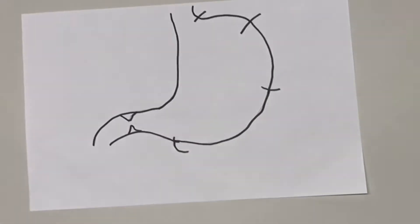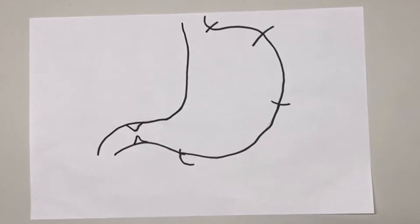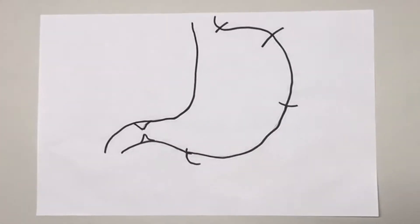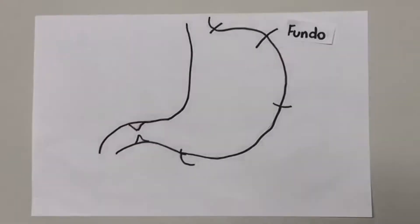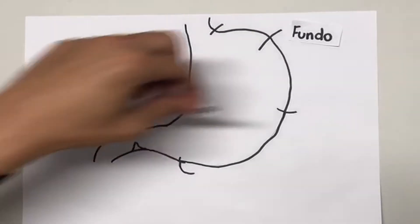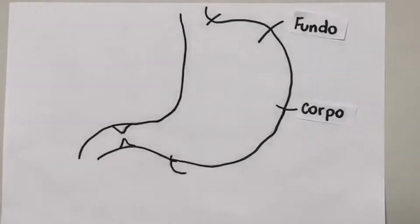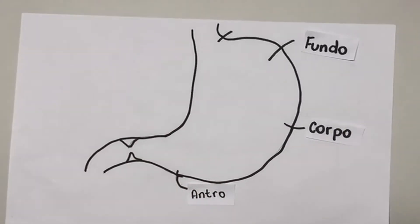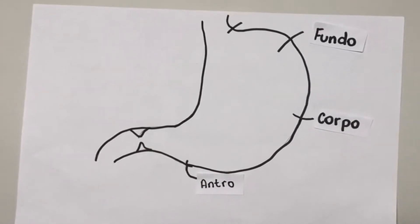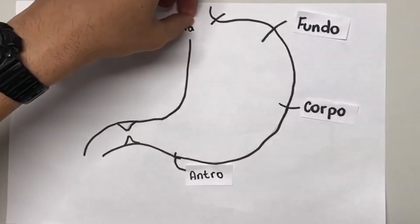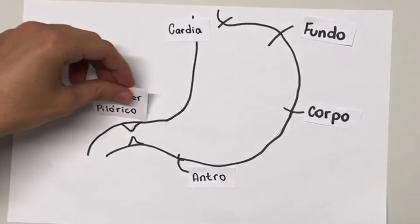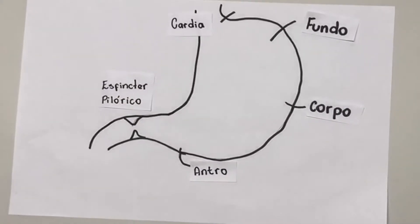Regulação da secreção gástrica. Para entender bem, primeiro é preciso observar a anatomia do estômago. Temos o fundo, mais abaixo o corpo, ainda mais abaixo o antro, e logo abaixo do esôfago, a região cárdia. Antes do intestino delgado, temos o esfíncter pilórico, responsável pelo esvaziamento gástrico.